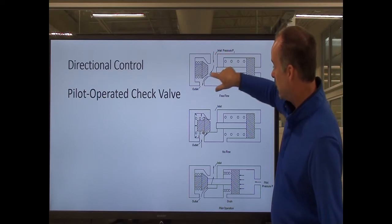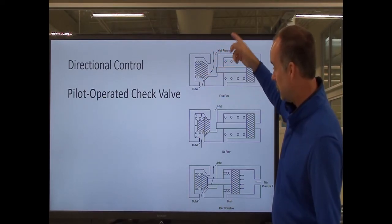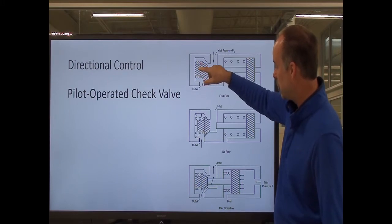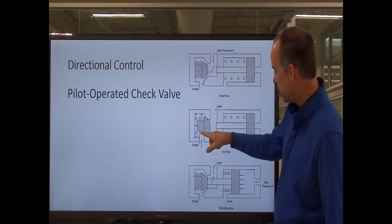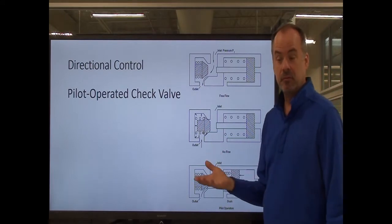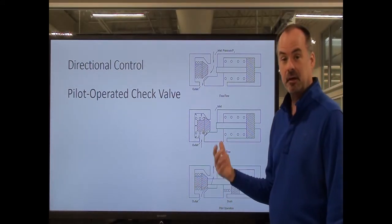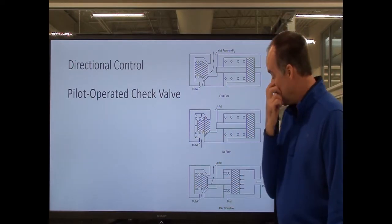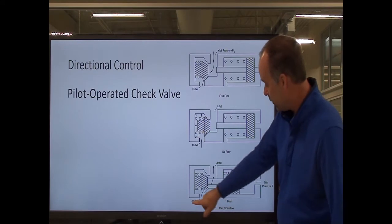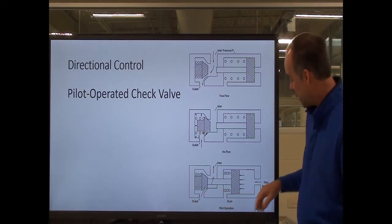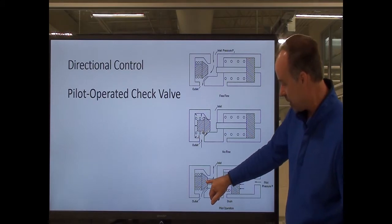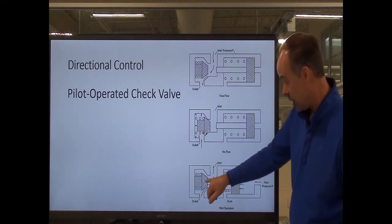On this type of valve, here's the check valve part. Under normal operation, the fluid comes in, pushes the poppet off its seat, and allows the fluid to flow against the spring. If I try to push the fluid back the other way, it'll actually push the poppet to the seat and block flow. But in some circuit applications I need fluid to flow backwards sometimes. So I've got pilot pressure on this check valve. If I've got fluid coming in and want to allow it to flow, I can put pressure on the pilot line, which actuates a piston that pushes down on the poppet seat and holds it open, allowing the fluid to flow.